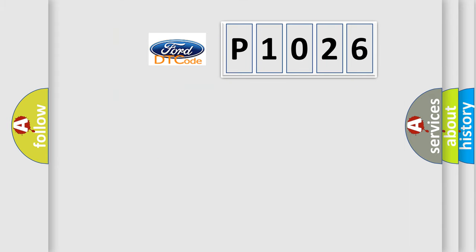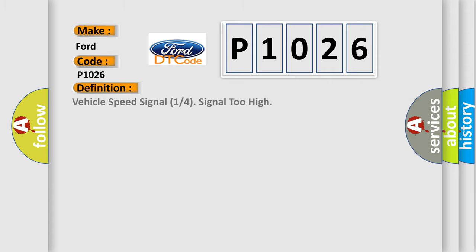So what does the diagnostic trouble code P1026 interpret specifically for Infiniti car manufacturers? The basic definition is vehicle speed signal 1 or 4 signal 2 high. And now this is a short description of this DTC code.